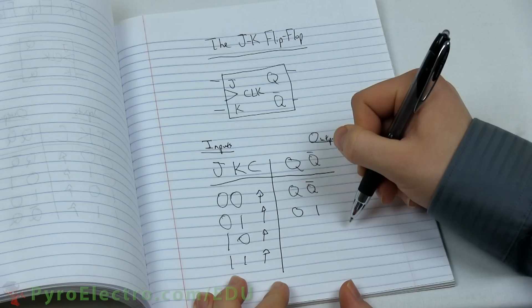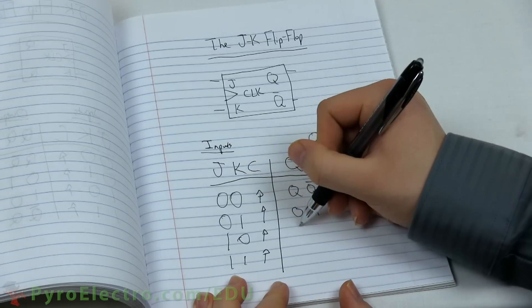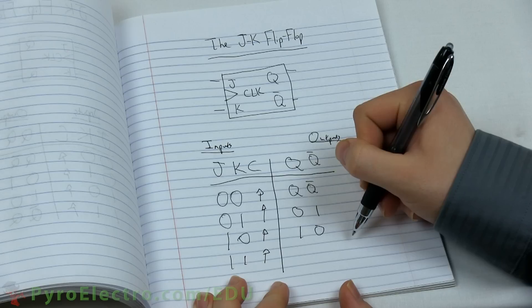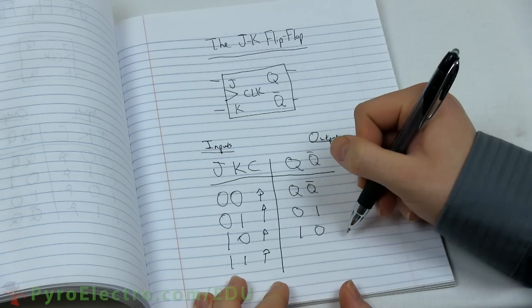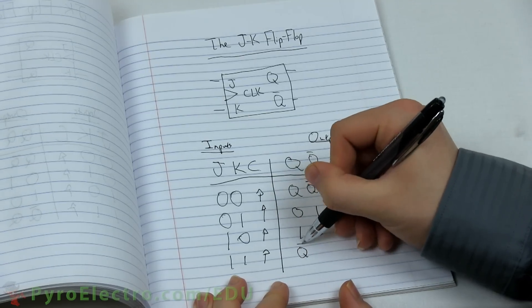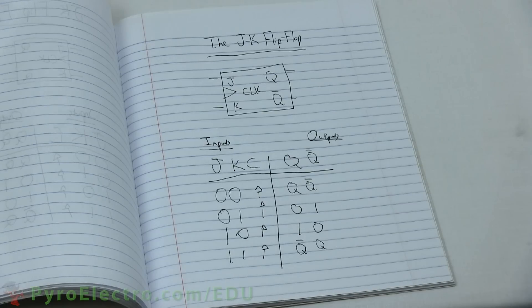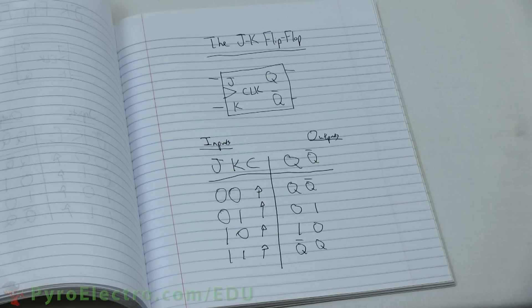The next line shows when JK is 1, 0 and the clock changes from 0 to 1. The output is Q at logic 1 and Q bar at logic 0. The fourth line shows when JK are both logic 1 and the clock changes from logic 0 to logic 1. The output should switch their states. That probably seems like a lot of information to capture, but we need to look at one more thing before we can take a breather.